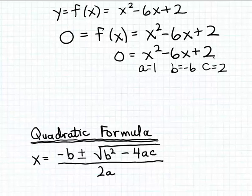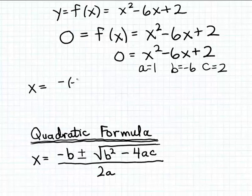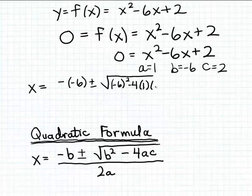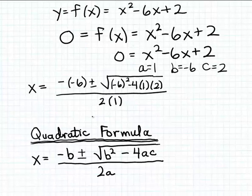Recall there may be as many as two solutions to a quadratic equation like this one. Applying the formula by substituting our coefficients, the solutions — which are the same as the x-intercepts of the original function f — are: x = (-b ± √(b² - 4ac)) / (2a), giving us -(-6) ± √((-6)² - 4·1·2), all divided by 2·1.